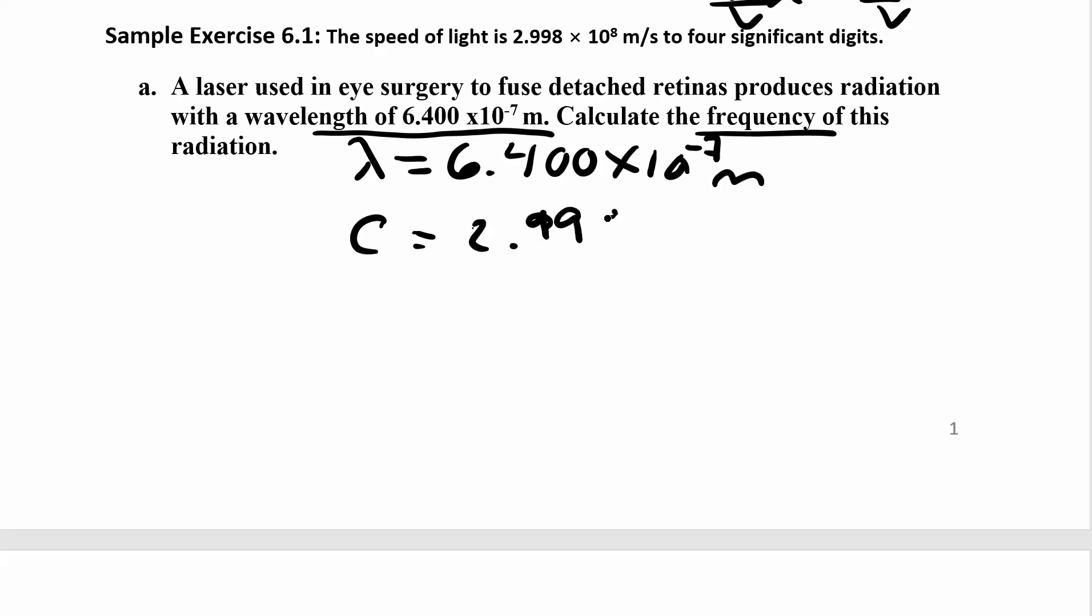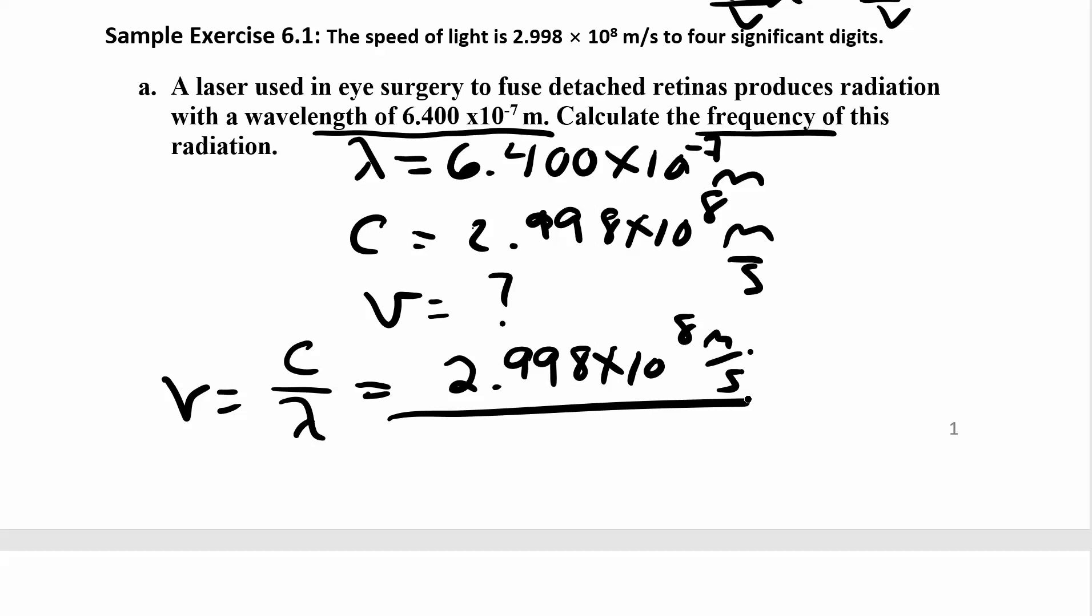And we always know C. It's 2.998 times 10 to the 8 meters per second. And what we're looking for is new, and that's going to be in seconds. So new equals C over lambda. C is 2.998 times 10 to the 8 meters per second divided by lambda, which is 6.400 times 10 to the negative 7 meters.